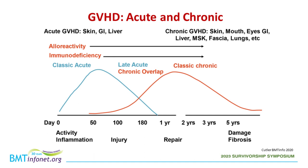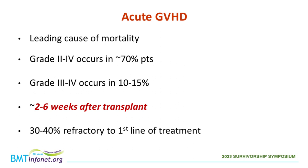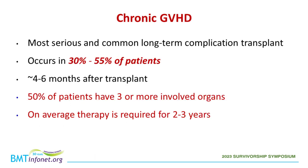Graft vs. host disease shows up in different ways early post-transplant. We typically think about acute graft vs. host disease generally in the first three months, but also seeping later on. Otherwise, what we mainly talk about is chronic graft vs. host disease — an effect of the donor cells that may last years. Acute GVHD remains a big problem of transplant and is a common issue. Chronic graft vs. host disease is something slower and progressive, and ends up being the most serious and common long-term complication.